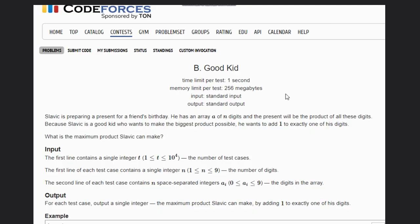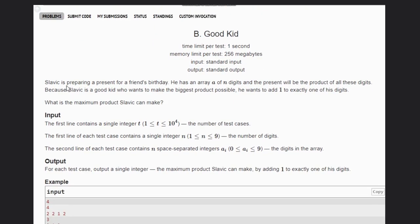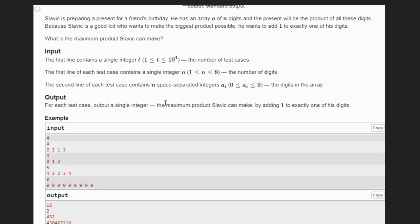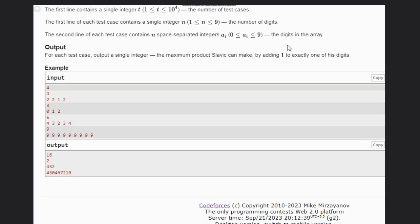Hello, welcome back to our YouTube channel. Today we are going to see the Codeforces problem Good Kid. So that is the B problem. Slavic is preparing a present for a friend's birthday. He has an array A of n digits, and the present will be the product of all these digits. Because Slavic is a good kid who wants to make the biggest product possible, he wants to add 1 to exactly one of these digits. What is the maximum product Slavic can make?